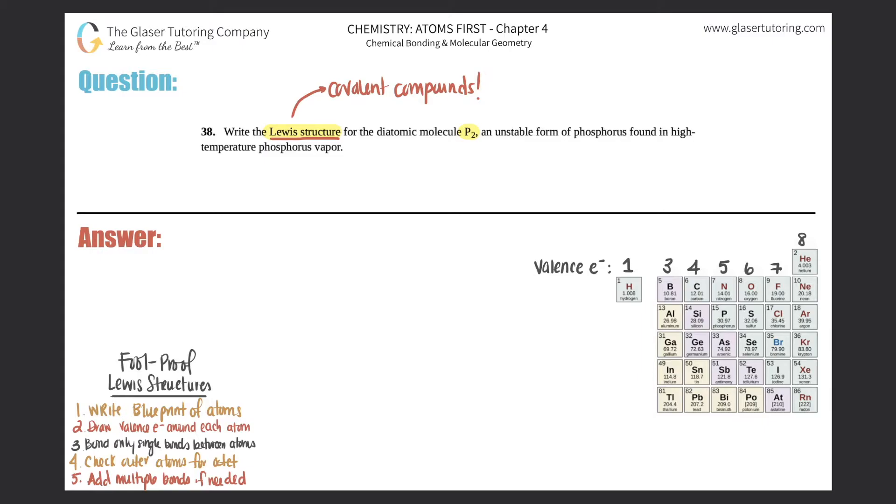Okay, so let's get to it. We want to know how to draw the Lewis structure for P2. So I'm just going to draw it over here, P2. All right. So the first thing to do in your Lewis structures is to write down a blueprint for your atoms, so just arrange your atoms as they would look. In this case though, we only have two phosphorus. We're going to be binding them together. So I'm just going to put one P over here and one P over here. So that basically ends number one.